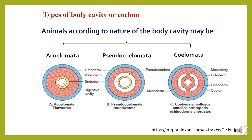In some animals, the body cavity is not fully lined by mesodermal epithelium; instead, mesoderm is formed as scattered pouches between ectoderm and endoderm. Such a body cavity is called a pseudocoelom. A true coelom (eucoelom) is a fluid-filled cavity that develops within the mesoderm and is lined by mesodermal epithelial cells called peritoneum. Animals with a true body cavity are called coelomates or eucoelomates.